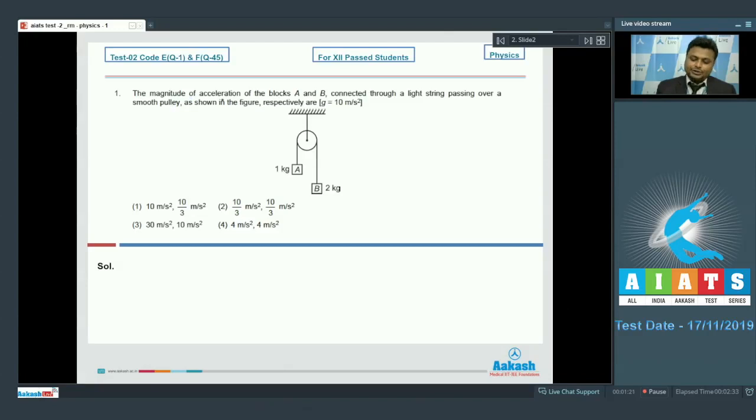Question number 1: The magnitude of acceleration of block capital A and capital B connecting through a light string passing over a smooth pulley as shown in figure respectively. Given that G equals 10 meter per second square. Now we have to calculate the acceleration of block A and B. Let's see, block B is heavier so it goes down with an acceleration A. Now since A is connected with block B directly, so A will go up with the same magnitude of acceleration A.